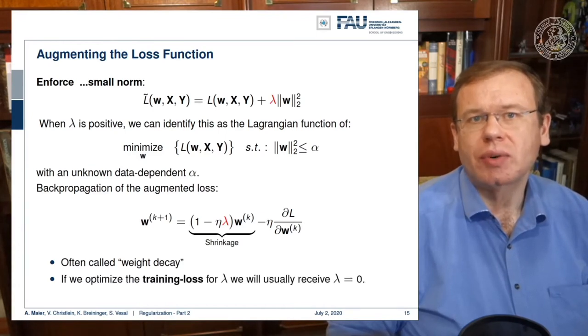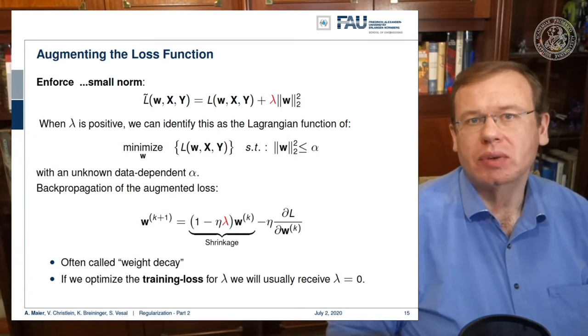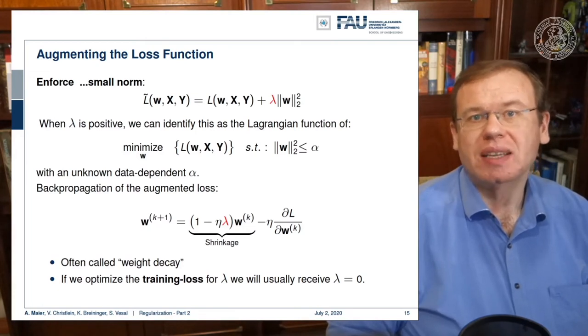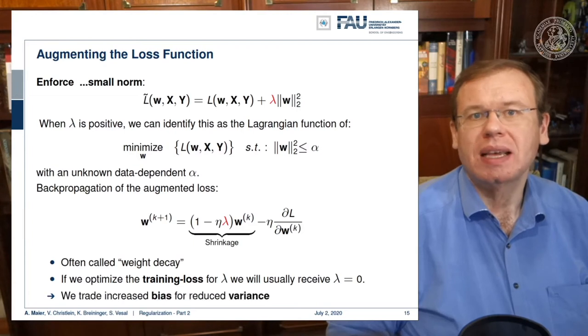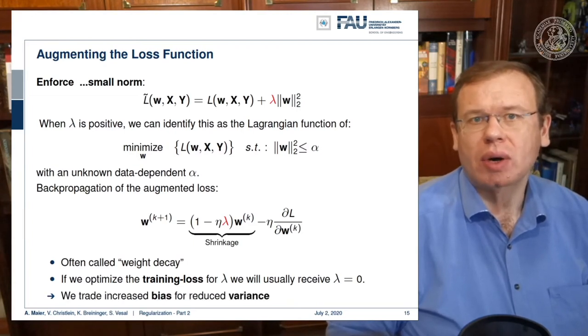If we choose different regularizers, the shrinkage functions change. If we would optimize the training loss now for lambda, we would usually receive lambda equals to 0, because every time we introduce regularization, we are doing something that is not optimal with respect to the training loss. Of course, we introduced it because we want to reduce overfitting. This is something that we cannot observe directly in our training data, but we want to get better properties on an unseen test set. This will even increase the loss value of our training data. So be careful about that. Again, we increase the bias for reduced variance.